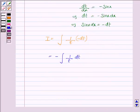Now, the integral of 1 upon t dt is log mod t. So this becomes minus log mod t plus c, where c is the constant of integration.